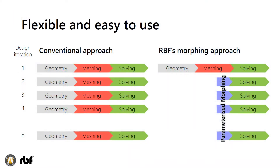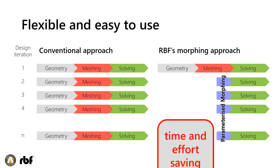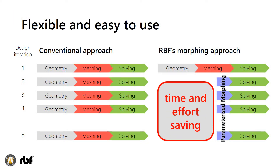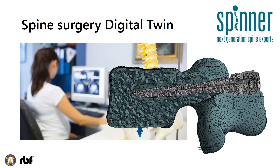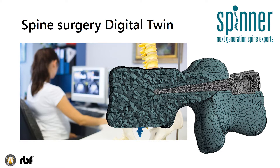RBF allows you to save time and effort by running multiple unattended variants. The generation of multiple snapshots allows enabling a digital twin.